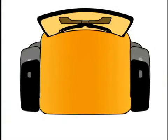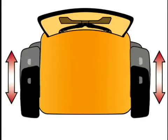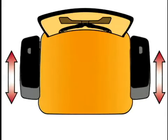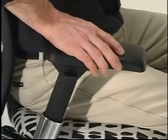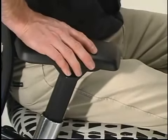Armrest Front-to-Back Adjustment allows users to get close to the work surface while maintaining effective use of the backrest. Grasp the armrest cap and move it forward or backward as needed.